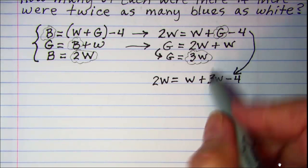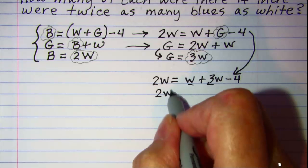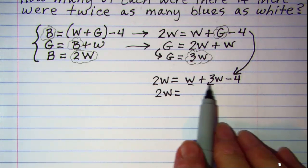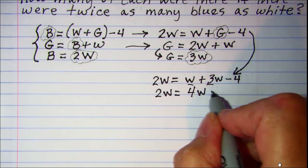Now I have a single equation with one variable. Let's do some simplifying. I can combine like terms here. So 2W is equal to W plus 3W is 4W minus 4.